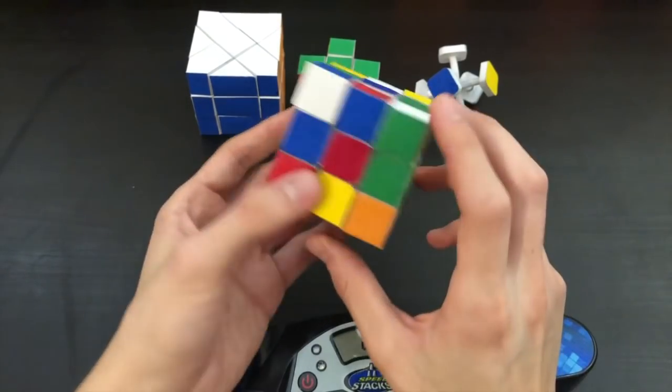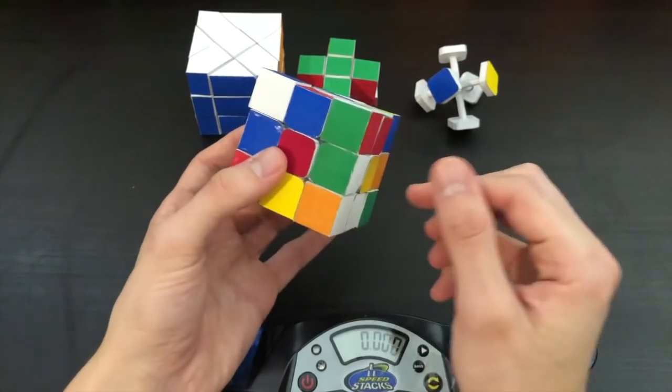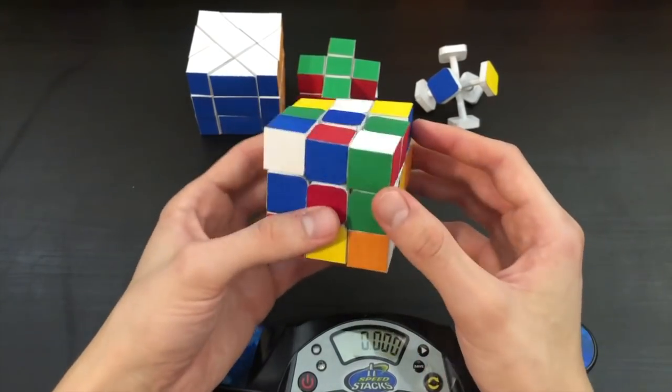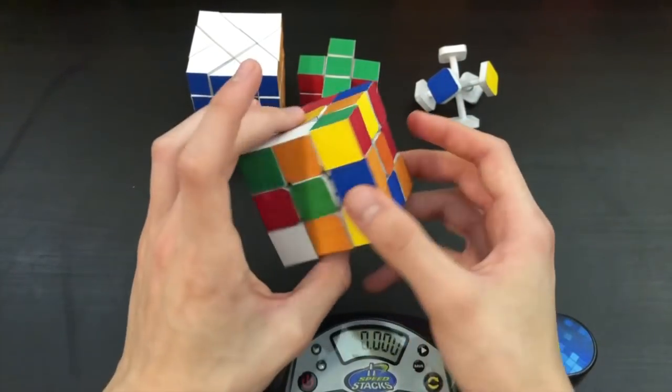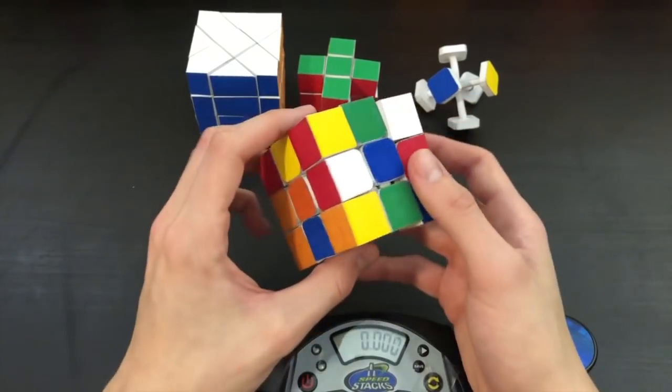So here we have the scrambled paper 3x3. The edges popped out a lot during scrambling but I was able to put them back in with ease. Let's hope that doesn't happen during the actual solve but let's go ahead and start with inspection.